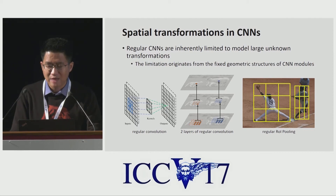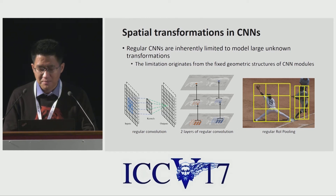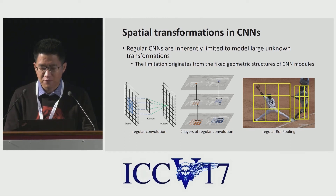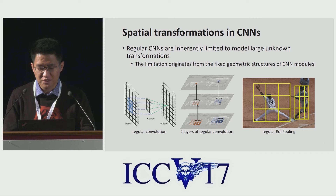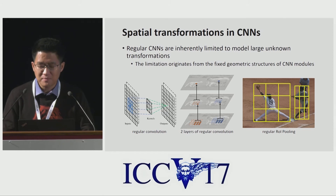Recently, convolutional neural networks have achieved significant success for visual recognition tasks. Nevertheless, they still share the above two drawbacks. The limitation originates from the fixed geometric structure of CNN modules. A convolution unit samples the input feature map at fixed locations. A ROI pooling layer separates a ROI into fixed spatial bins, etc. There lacks internal mechanisms to handle geometric transformations.